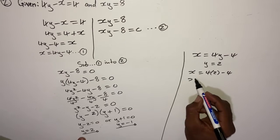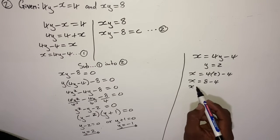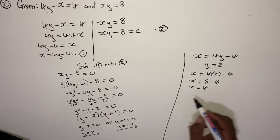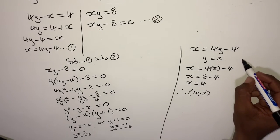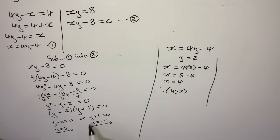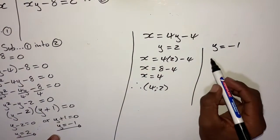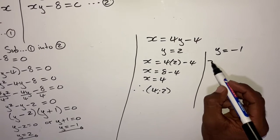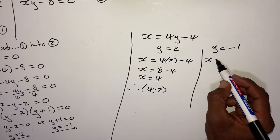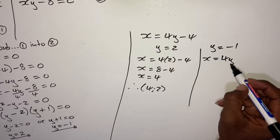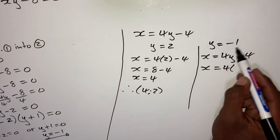From here, factorize to solve for y. Open two brackets: (y)(y). Focus on the constant — find factors of 8: either 8 times 1 equals 8, or 4 times 2 equals 8. Your two numbers must multiply to give 8 and subtract to give 2. Testing 8 and 1: 8 minus 1 = 7, so these don't qualify. Testing 4 and 2: 4 times 2 = 8 and 4 minus 2 = 2 — that's what we need. So factors are 4 and 2.